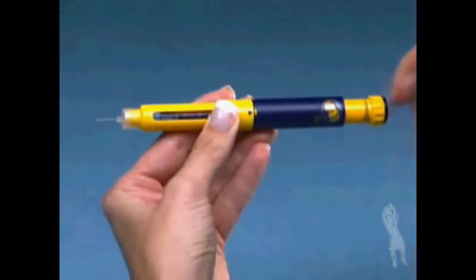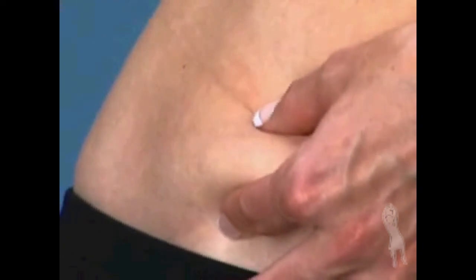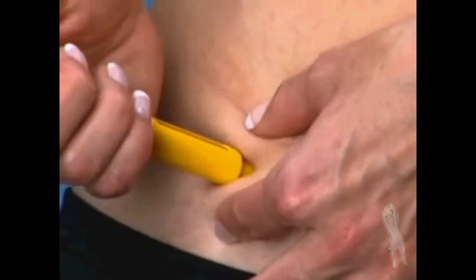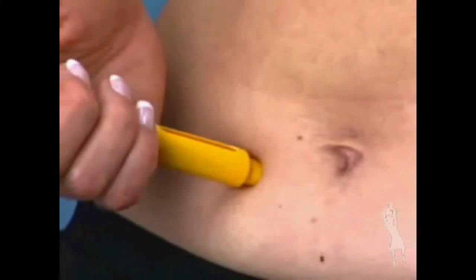Once you have set the Follistim pen to the correct dose, you are ready for your injection. Pinch the already cleaned injection site between two fingers. With the other hand, insert the entire BD Microfine pen needle straight into the skin. Release the pinch.